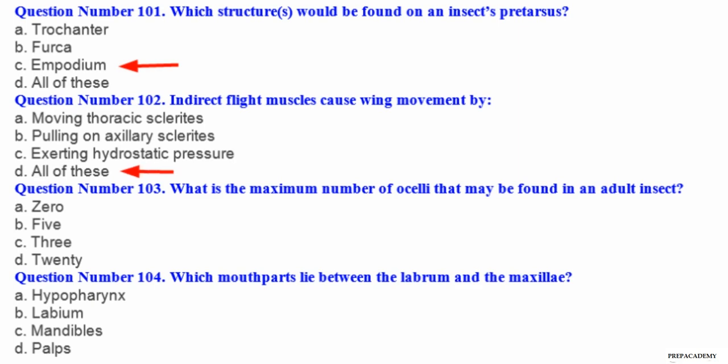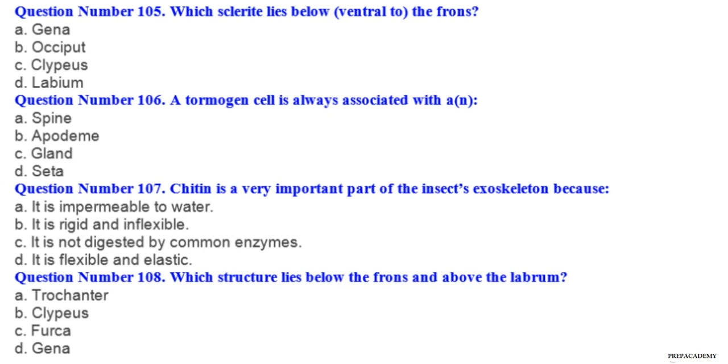Question number 103. What is the maximum number of archery that may be found in an adult insect? A 0, B 5, C 3, D 20. Question number 104. Which mouth parts lie between the labrum and the maxillae? A hyperpharynx, B labium, C mandibles, D palpi.